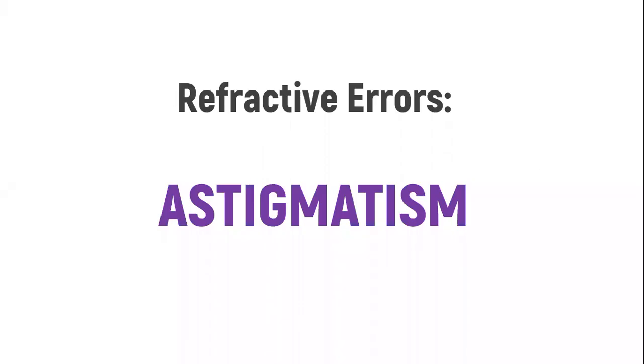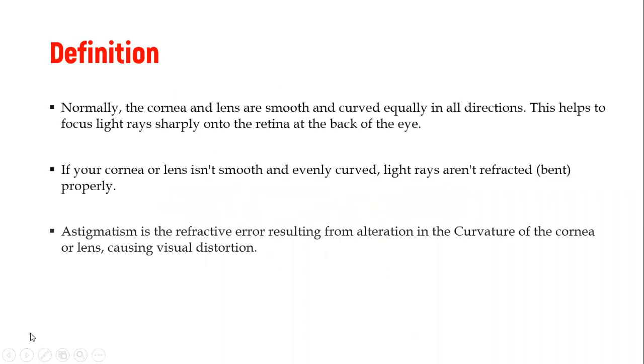Today we will look at another refractive error, which is called astigmatism. This is basically a refractive error that is a bit different from what we looked at previously, that is myopia and hyperopia.